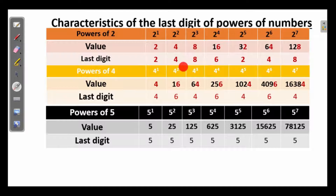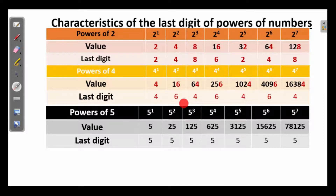2 into 2 is 4. 4 into 2 is 8. 8 into 2 is 16, last digit 6. And here, to find the last digit of the next power of 4, it is enough to multiply the last digit by 4. 4 into 4 is 16, last digit 6. Then the last digit 6 is multiplied by 4 — again last digit 4. Last digit 4 multiplied by 4: four 4's are 16, last digit 6. So there is no need of finding the whole value to find the last digit of a power of a number.